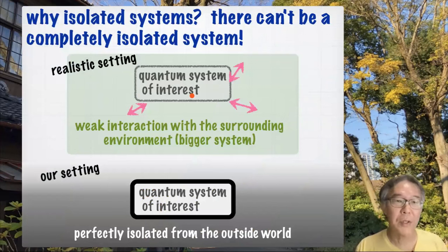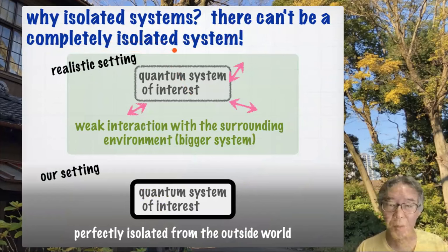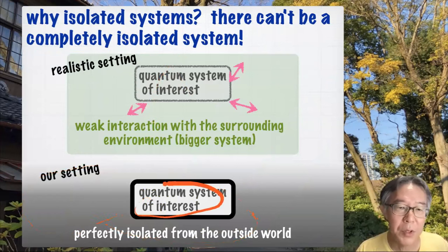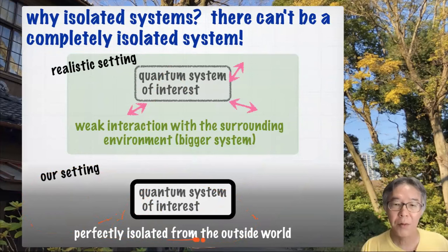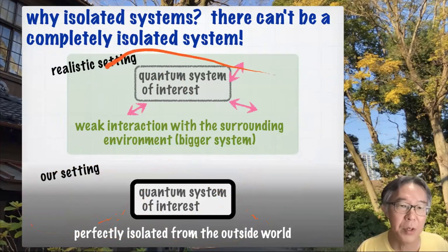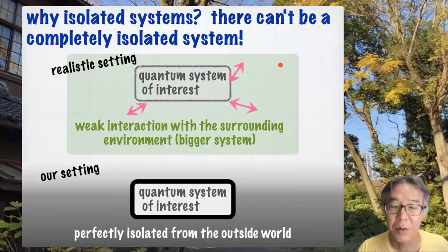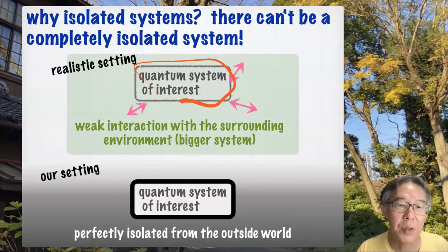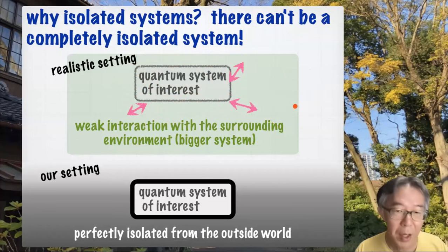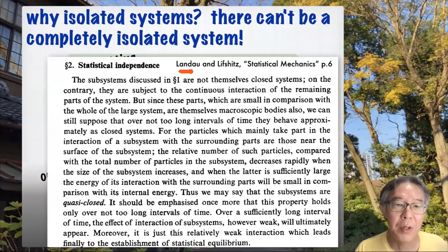Another question is about the setting. We consider a totally isolated system, but there can't be a completely isolated system. So why do we treat an isolated system? This is our setting — a quantum system of interest perfectly isolated from the outside world. But if you think about the real physics, this should be the situation: you have a quantum system of interest, then there is a surrounding environment — a larger quantum system — and there always are interactions between the quantum system of interest and the surrounding environment.